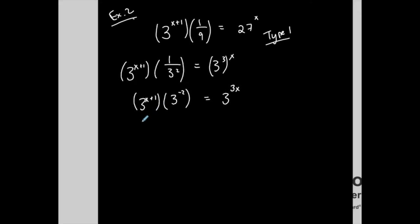And I'm multiplying two terms with the same base. Well, we keep the base and we add the exponents. x plus 1 plus negative 2 is equal to 3 to the 3x. So I'm adding the exponents because I'm multiplying the bases. The only time you multiply exponents is when you have a power of power.